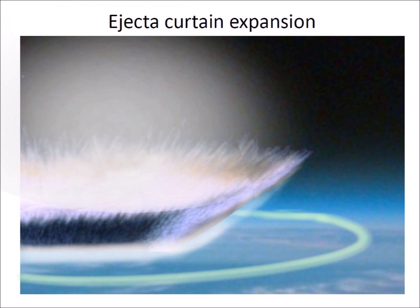Water ejected above the atmosphere produced clouds of ice crystals in the vacuum of space. As the vapor plume in the ejecta curtain expanded, they pushed the polar jet stream southward and trapped it under the ejecta curtain.